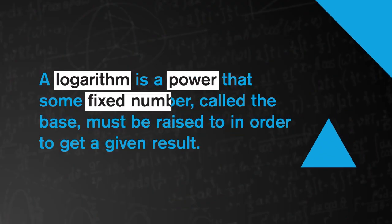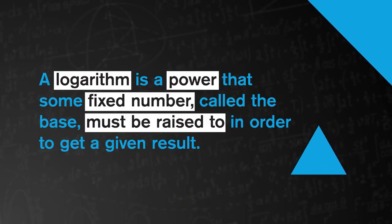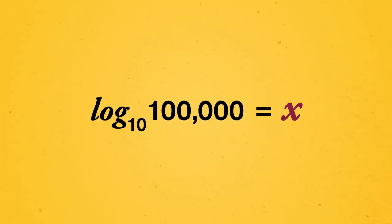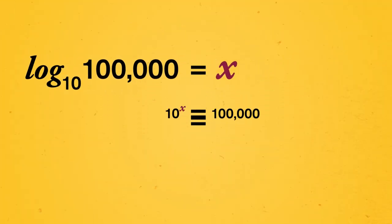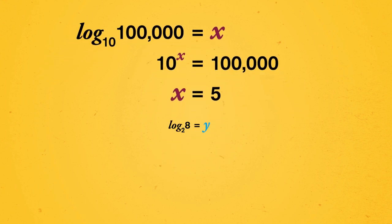A logarithm is a power that some fixed number, called the base, must be raised to in order to get a given result. For example, log base 10 of 100,000 is the power of 10 that gives 100,000, and log base 2 of 8 is the power of 2 that gives the answer 8.